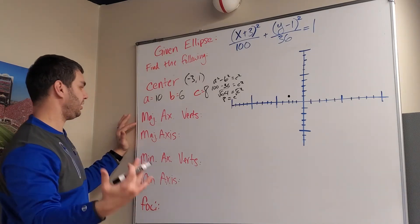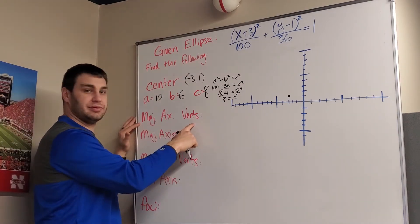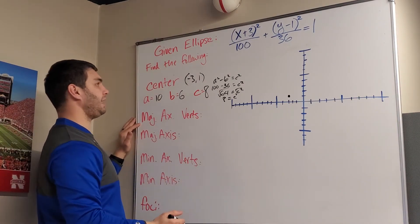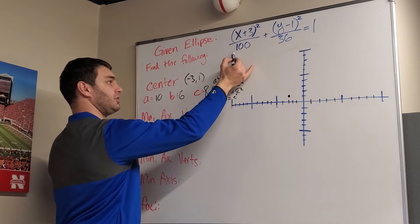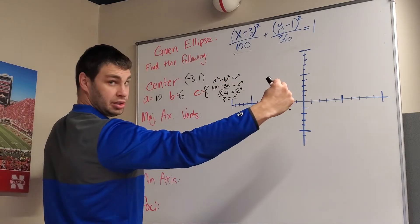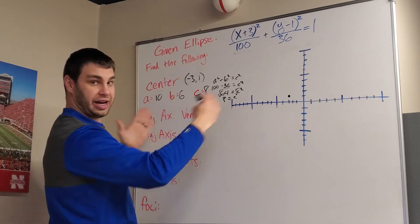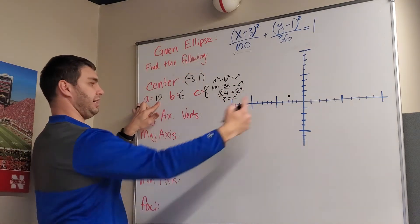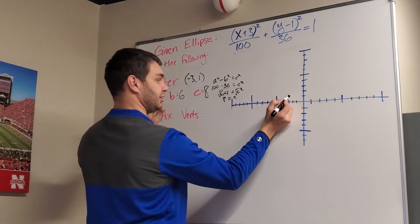Let's see what else it's telling us. First off, our major axis vertices. So our major axis, since it's x that has a larger denominator, we're going to be longer than we are tall, or fatter than we are tall. So in this case, I have to go 10 spots in both directions from my center.